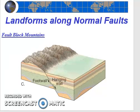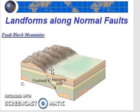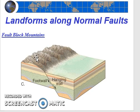Previously, we noted that fault block mountains form in regions that have normal faults. Look again at the diagram and review this. When the hanging wall falls down relative to the foot wall, the resulting higher topography over here on the foot wall is called a fault block mountain. So fault block mountains are the result of normal faults, which are the result of tensional stress.